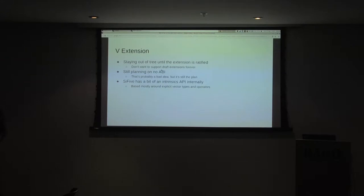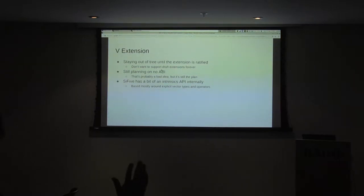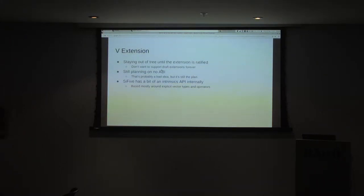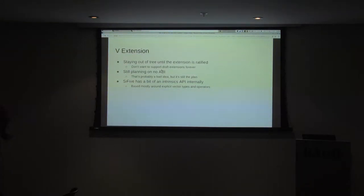The ISA is pretty far from being finalized, so there's some time to work around. When you say no ABI, are you going to have any specs on whether these registers are explicitly corruptible by things like long jump? Yeah. So no ABI means that every function call destroys your entire vector state. There's no vector-specific ABI. So you basically have to assume that there's no way to pass state in vector registers, either around a function call or into a function call.